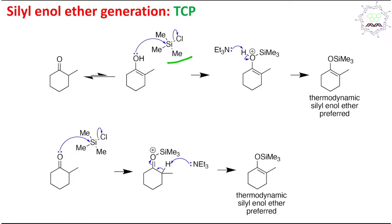The keto–enol equilibrium generally favors the keto form when no specific stabilization factors are present. In the reaction medium, a small amount of enol exists, and this enol can act as a nucleophile through its oxygen atom — it attacks the silicon center. Although enols generally react as nucleophiles from the carbon side, this silicon case is an exception because of the exceptional stability of the silicon–oxygen bond. After attack, the oxygen carries a formal positive charge, and chloride leaves to produce the TMS ether.